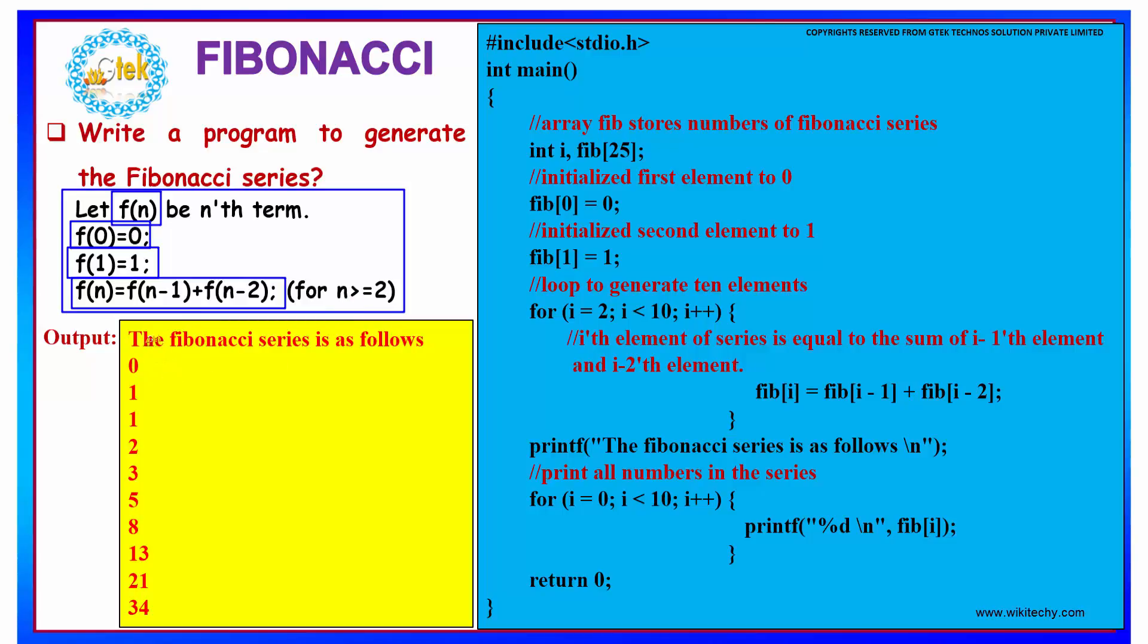Simply to say, our Fibonacci series is nothing but: if you see, my first two values are standard as 0 and 1, and our third value is nothing but the sum of the previous two values, that is 1 plus 0 is 1.